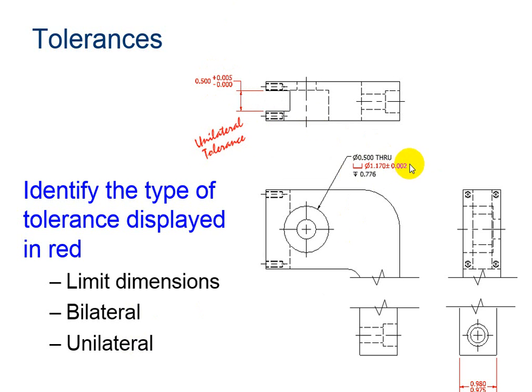Now let's look at the middle red dimension. Please choose from these three choices which is the correct type of dimension for this example. If you chose bilateral tolerance, you are correct. How did I know? Because there is a plus minus combination indicating that my tolerance can be .002 larger or .002 smaller than 1.17.